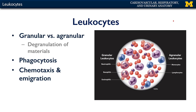Leukocytes come in two different varieties. There are granular leukocytes — those that contain tiny little granules that can be degranulated or ejected from the cell — and agranular leukocytes, those that appear smooth under light microscopy and do not contain granules that can be degranulated.